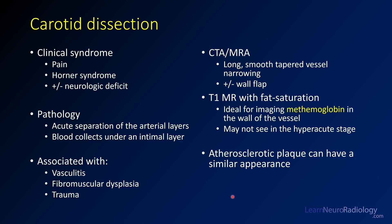This is a carotid dissection, which is frequently associated with pain. You can often get a Horner syndrome and neurologic deficits potentially related to intracranial abnormalities on the side of the dissection. The pathology is an acute separation of the arterial layers — the intima is separated from the media and adventitia. Blood collects under that intimal layer and ultimately converts to methemoglobin, which is the bright component seen on imaging.